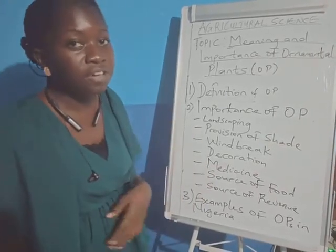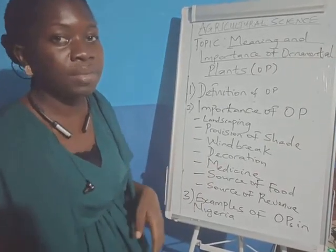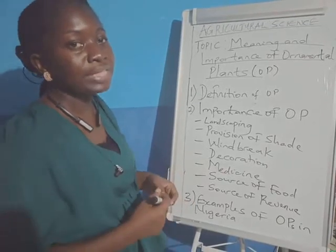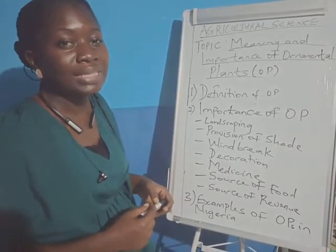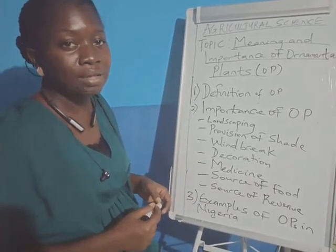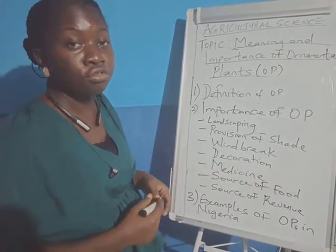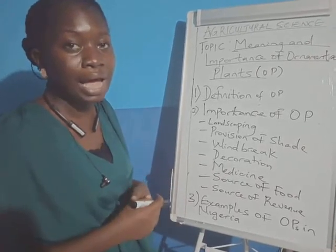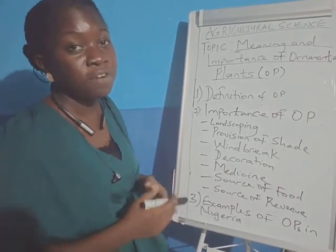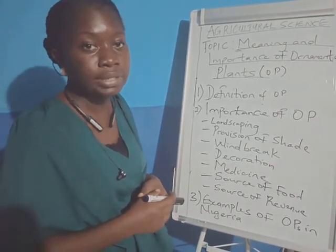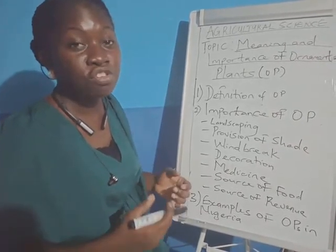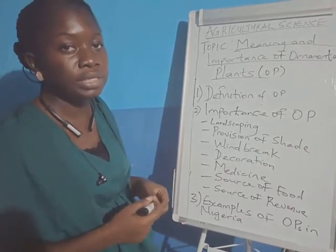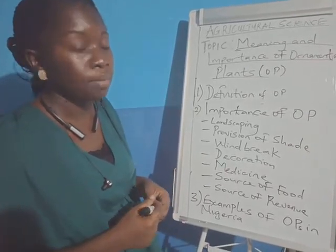So I'm going to start with the definition of ornamental plants. What are ornamental plants? Ornamental plants are plants which include trees, shrubs, and herbs that are used for different purposes by man.